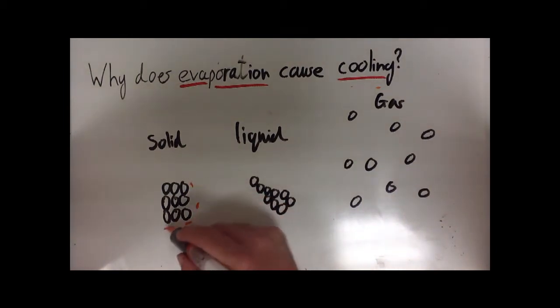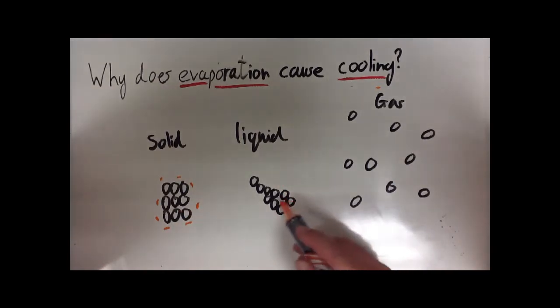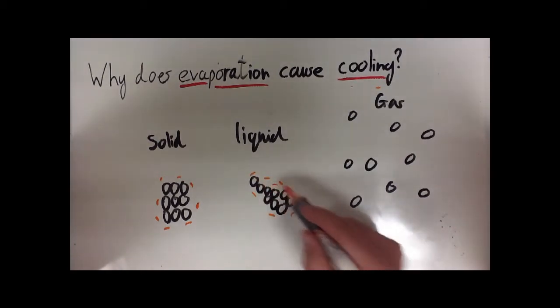Solid is held together by strong bonds, it's touching and it's vibrating. So it's in a fixed ordered shape. Liquid has weaker bonds and it can flow all over the place. Particles are still touching but they're moving around freely.